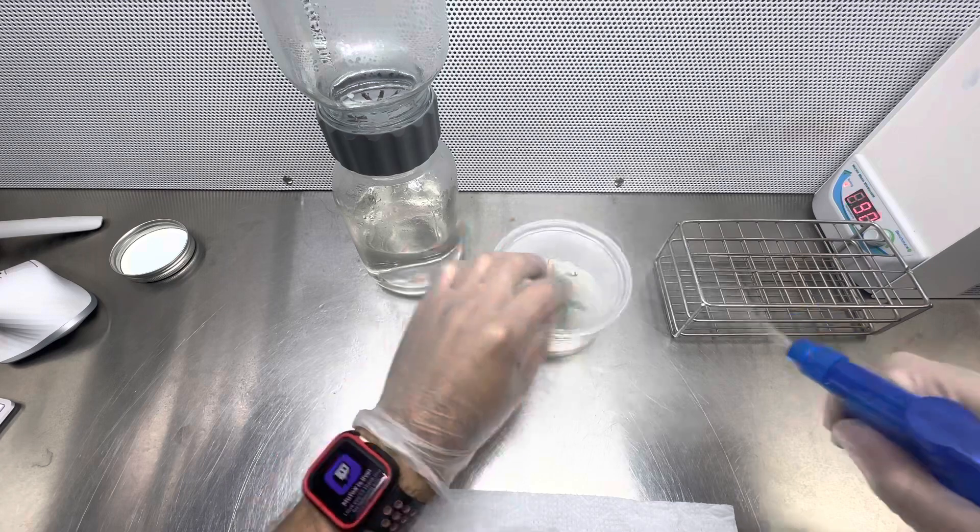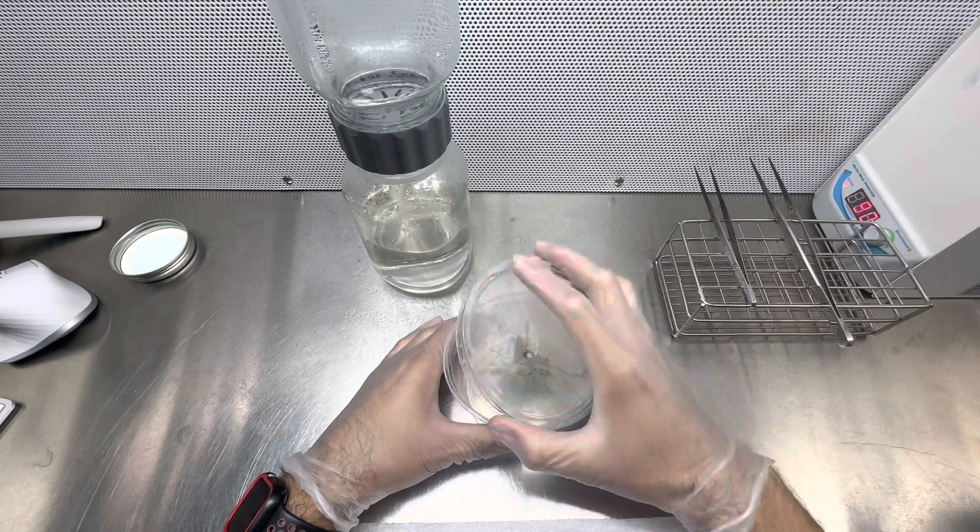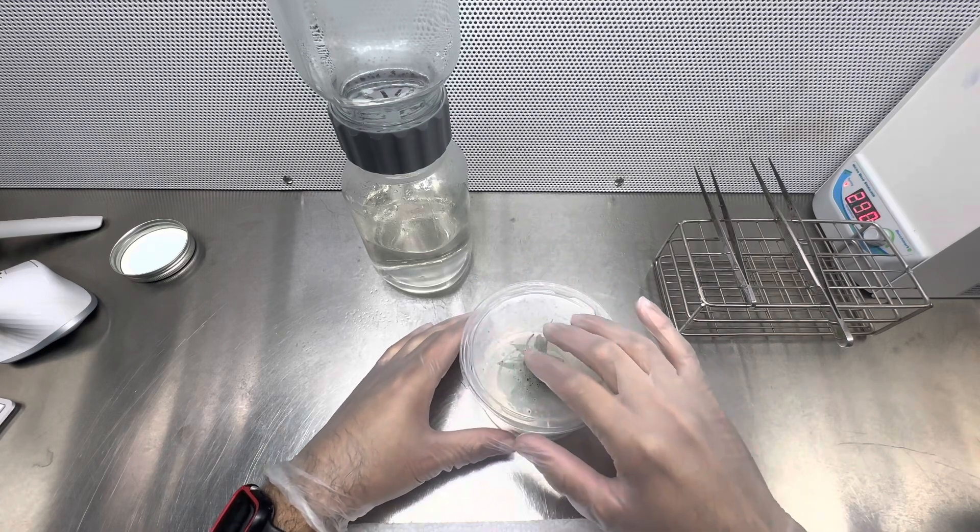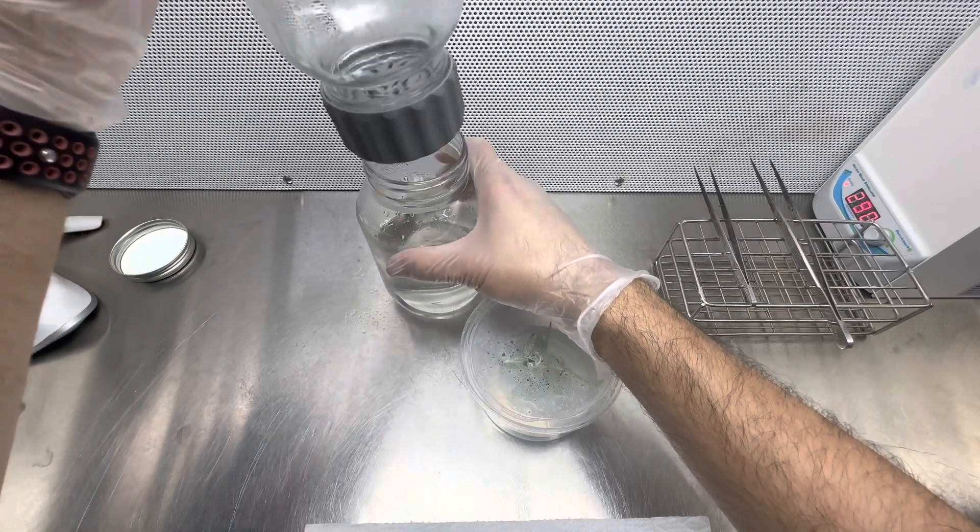Now it's time to move the plant to the biocoupler. First, I spray it with some isopropyl alcohol again to keep it sterile. One tip I have is do not place the plant in the top glass jar as it's going to be more difficult to do.